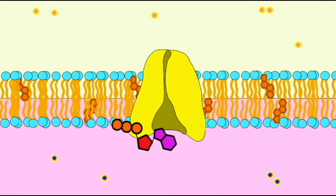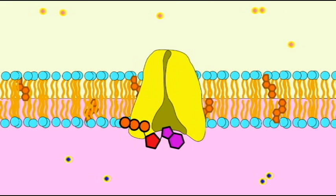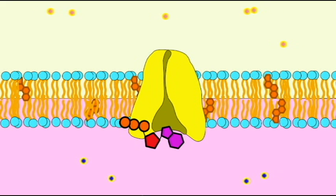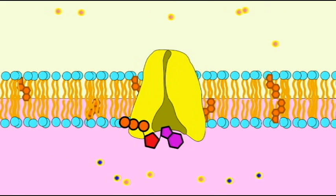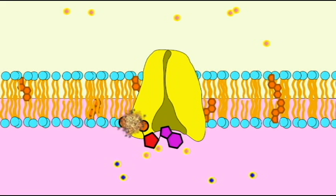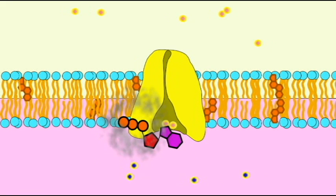Since sodium and potassium ions are both positive ions, one would think that their crossing the cell membrane would not affect the charge of the cell membrane, or the charge difference across the cell membrane.